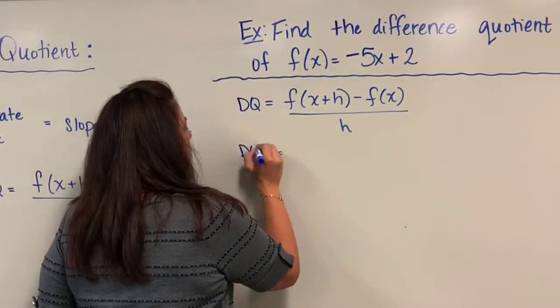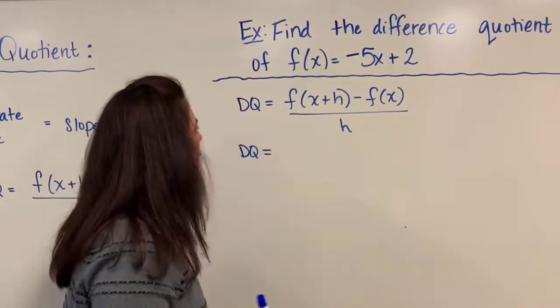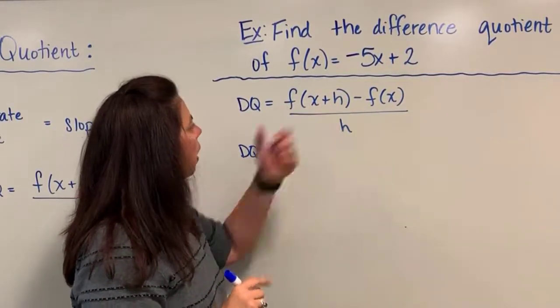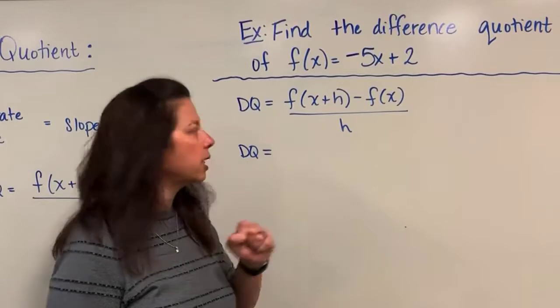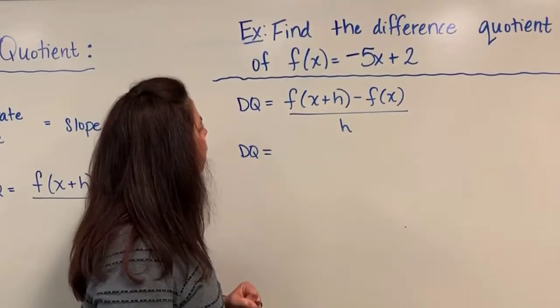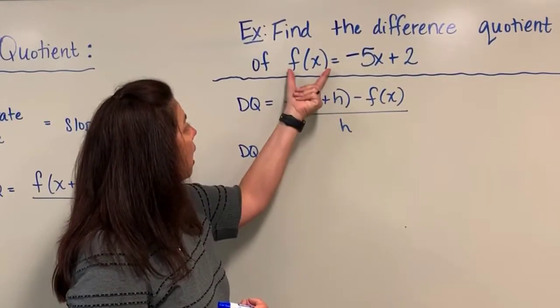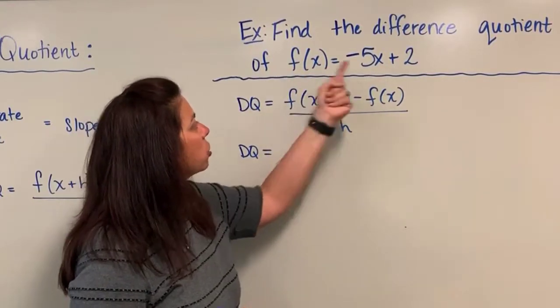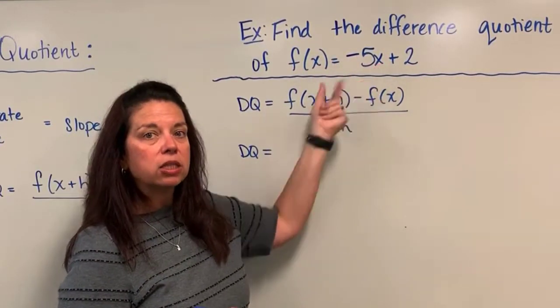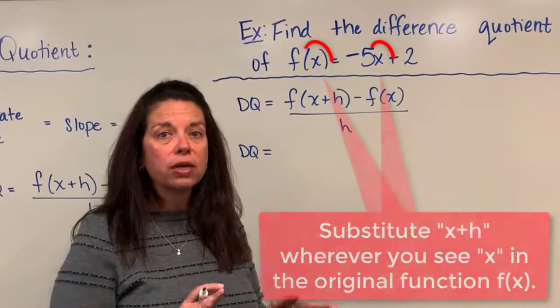So here we go, we've got the difference quotient is equal to... now the trick to know here is you've got to be very swift with your function notation understanding. Here when we have f of x plus h, that is telling us to go to the function called f and insert in, substitute in, this quantity x plus h in all the x's that you see.